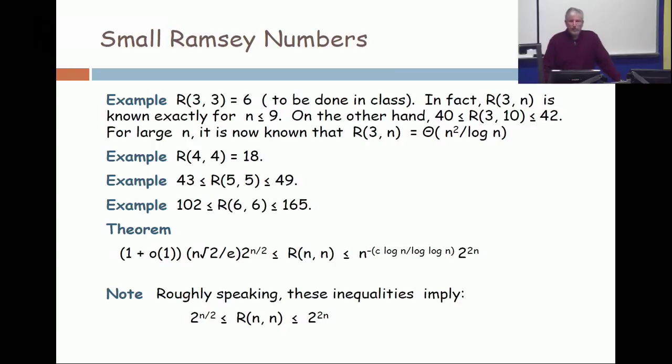So, nobody has been able to explicitly construct exponentially large graphs for lower bounds on the Ramsey numbers. All the proofs are existential in nature using probabilistic techniques.